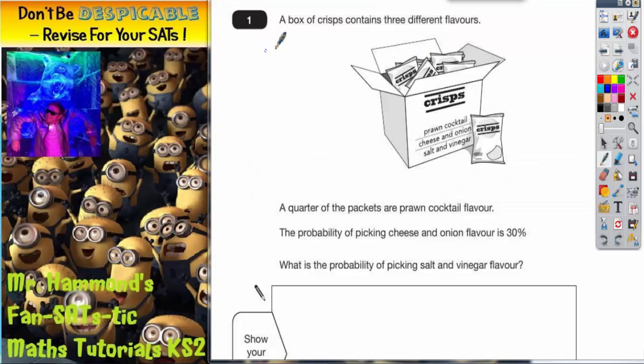Question number one is all about crisps. A box of crisps contains three different flavours. On the side of the box you can see we've got prawn cocktail, cheese and onion, and salt and vinegar.